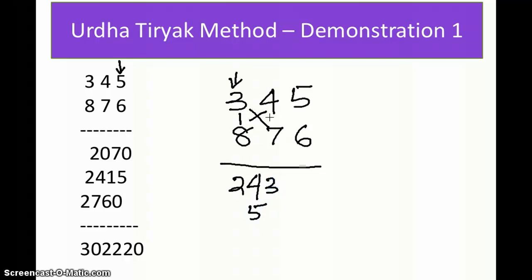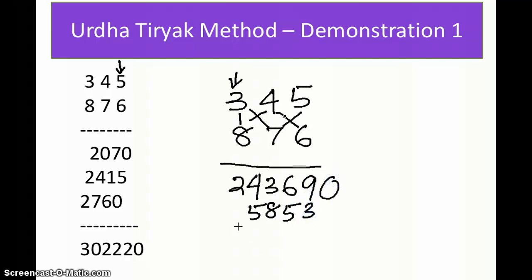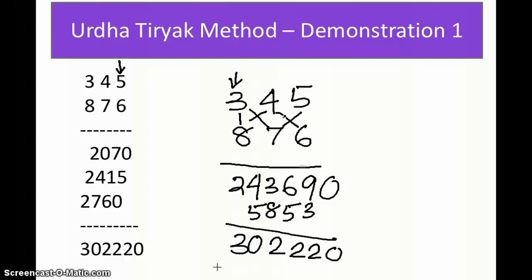Next, 3 × 6 is 18, plus 8 × 5 is 40, giving 58; plus 7 × 4 is 28, so that gives 86. Then 4 × 6 is 24, and 7 × 5 is 35, giving 59. Then 6 × 5 is 30. Now carrying forward: this is 0, carry 2; again carry 1; again carry 1; again carry 1; 5 + 4 = 10, carry 1; 2 + 4 = 3. So the answer is 302,220.